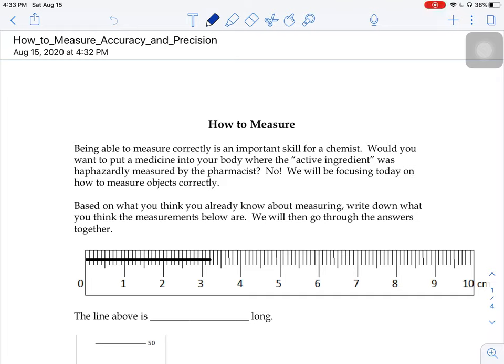What we're going to be looking at today is how to properly measure. Being able to measure correctly is a very important skill for a chemist. So just as an example, would you want to put a medicine into your body where the active ingredient was haphazardly measured by a pharmacist? Probably not. So we want to focus today on how to measure things correctly.